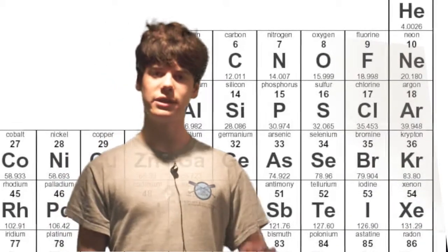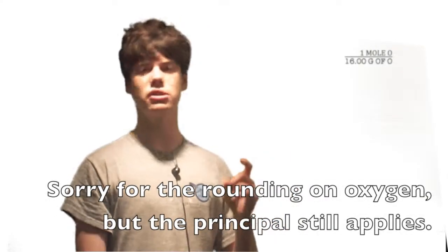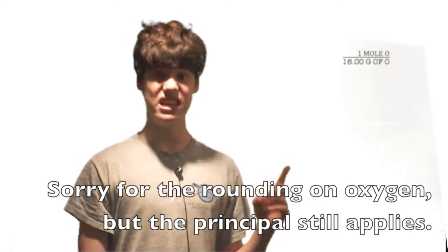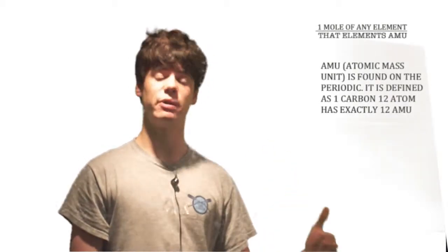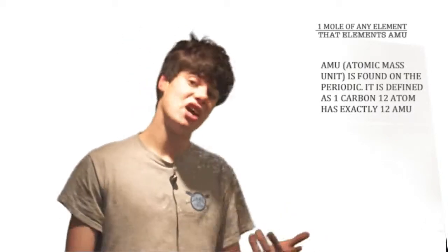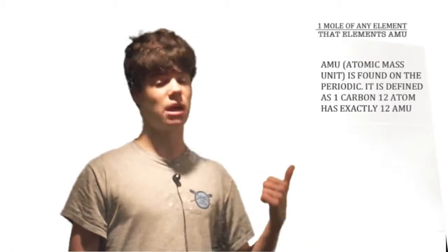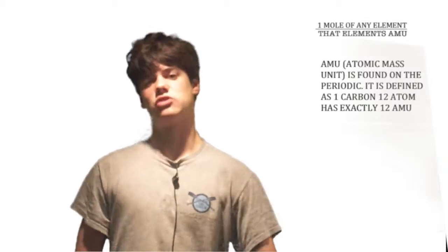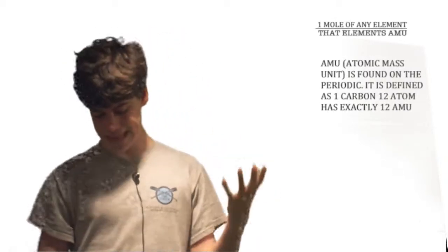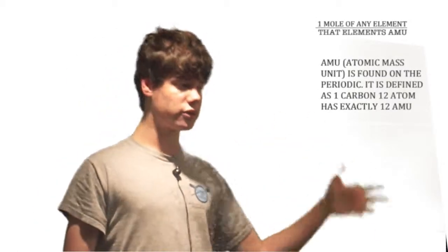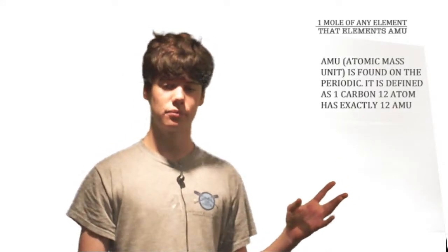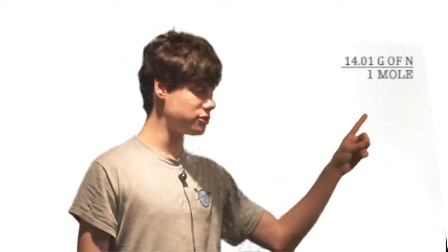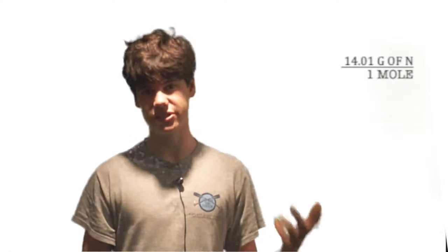A mole was calculated specifically so that in one mole of any element, there will be exactly that element's atomic mass unit in grams. For example, in one mole of oxygen, there's exactly 16 grams. In one mole of carbon, 12.01 grams. So in one mole of anything, there's simply its atomic mass unit worth of grams — that's how the mole was calculated.